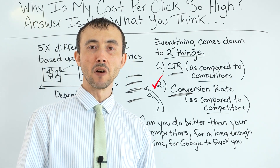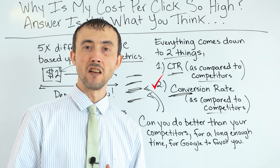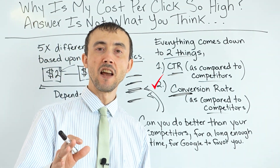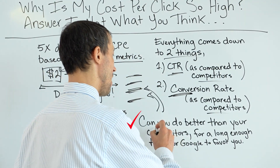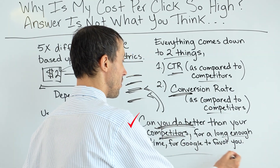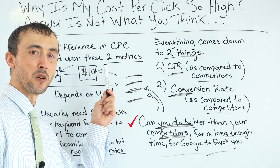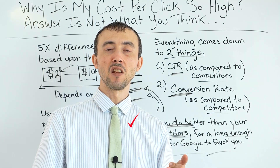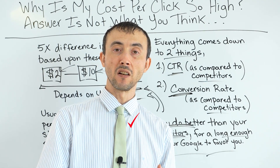Same thing with conversion rate. If you're in a market where you can make ten million dollars a year in profit by getting your ads to run full-time, obviously it's going to take a lot more than if you could make a hundred grand a year in profit. And of course if you hire an agency, the more you're going to have to pay them to get it set up right. The question comes down to: can you do better than your competitors for long enough for Google to favor you, so that you're paying two dollars a click versus ten?